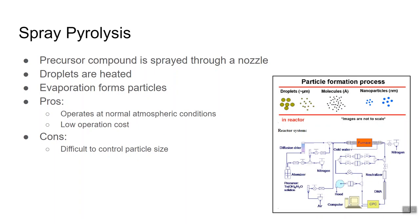Spray pyrolysis. This method involves spraying a precursor solution at high pressure through a nozzle to create small droplets. The droplets are then heated to evaporate them, thus creating nanoparticles. The particles created are spherical in shape. The advantages are that the process operates at normal atmospheric conditions, meaning you don't need a vacuum environment, and it's low operational cost. The disadvantages are that it is difficult to control the size of the droplets leading to a non-uniform particle size.